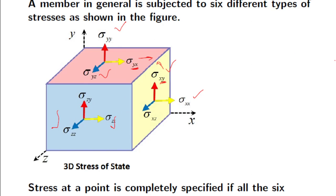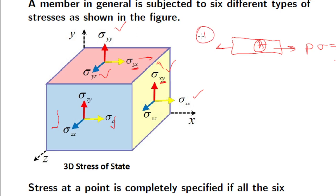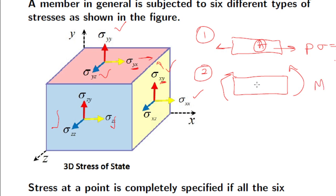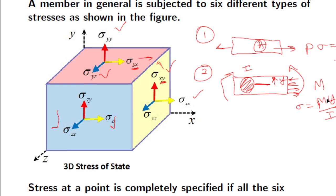We will quickly review how to find stress components. If it is a bar subjected to an axial load P with cross-section area A, you can find the normal stress as P by A. Second case: if you have a beam subjected to a bending moment M, with neutral axis and a point at distance y from it with moment of inertia I, you can find the bending stress as sigma equals M y by I. These stresses are compressive at the top layer and tensile at the bottom layer.